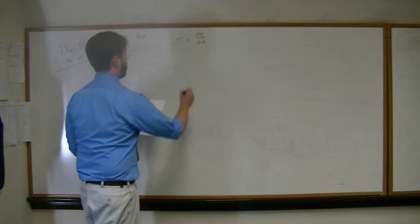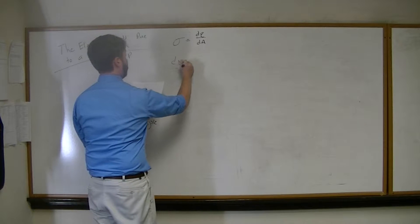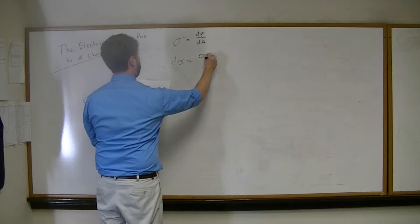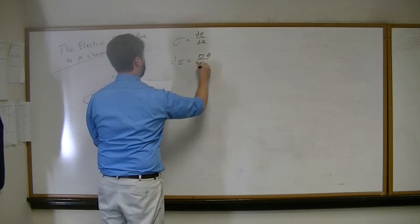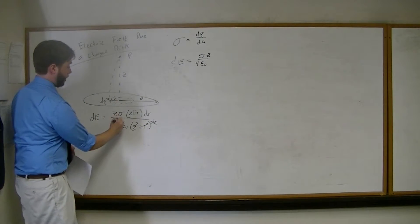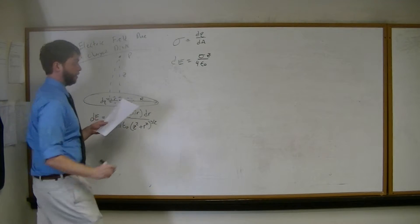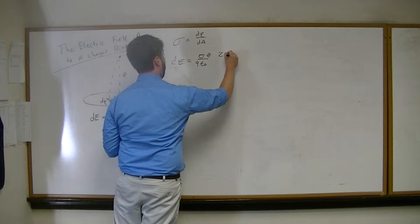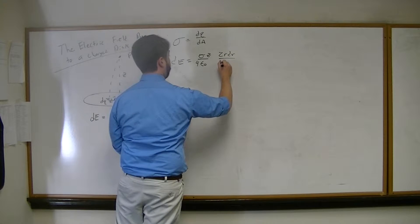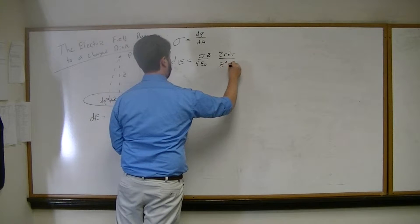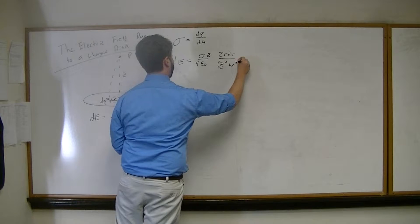So now coming over here, let's eliminate some things. So we have dE is equal to sigma z over 4 epsilon naught. All I did was cancel out the pi here and here to make life a little bit easier. And now I have 2r dr over z squared plus r squared to the 3 halves.